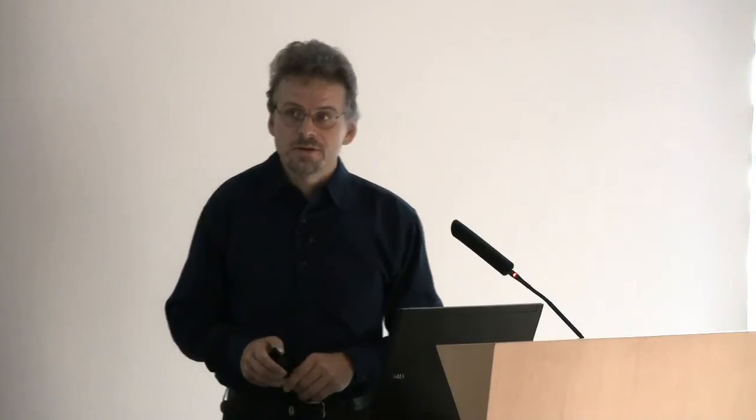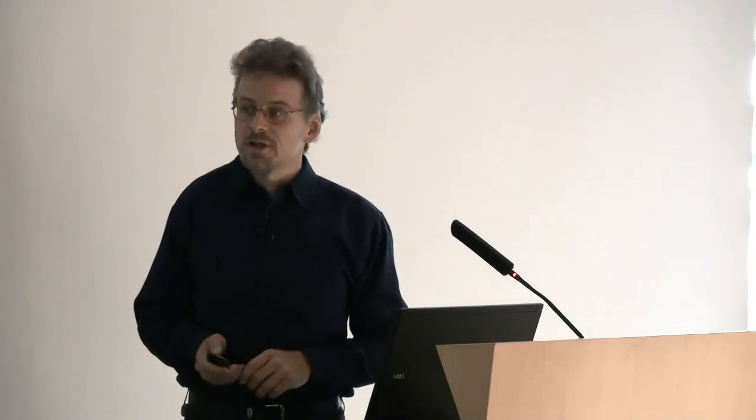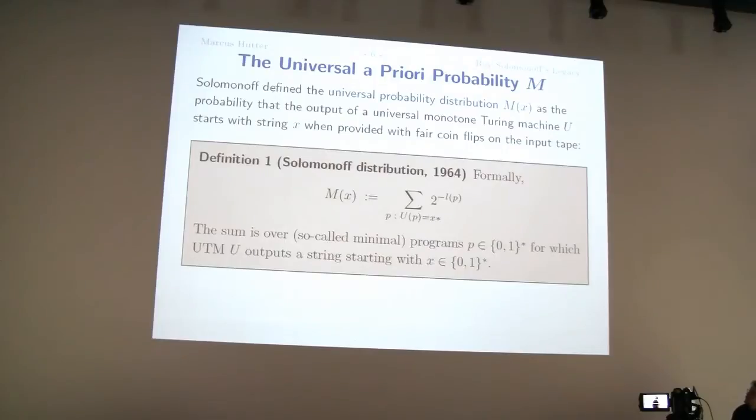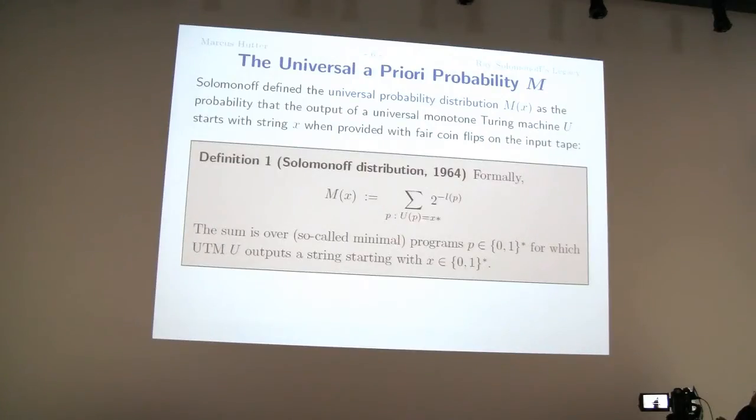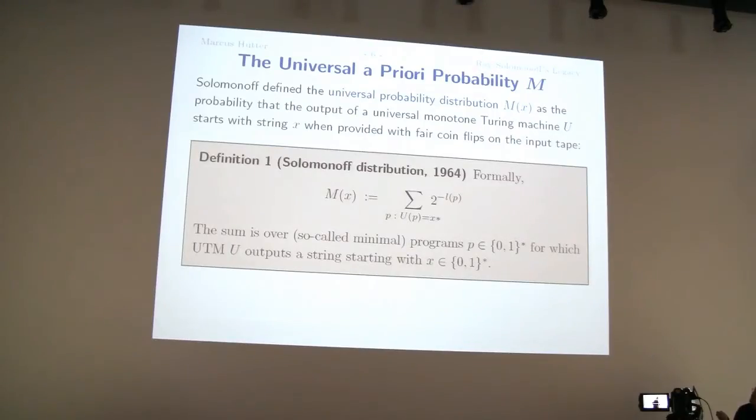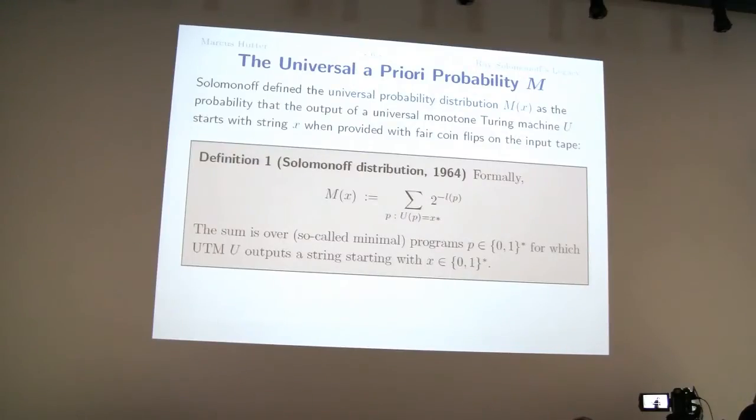At first, that doesn't sound very sort of interesting or potentially interesting. But this distribution has remarkable properties. So here is a more formal definition, which is more or less the same. So what you do is, you take all programs P and look whether this program on a universal Turing machine produces X, followed by something. And if this program has a certain length or number of bits, then the rest doesn't matter anymore. So the input tape consists of all zeros and ones. But you read only the first L bits. So the probability that these first L bits are just P is 1 half to the power L of P, the length of P. Because each bit of this L has to be right. So this gives you a probability distribution of 2 to the minus L of P. But then there are of course many different programs and you sum them all up. And that's the probability of M of X.